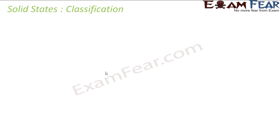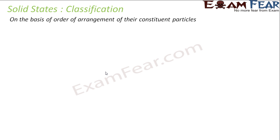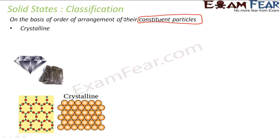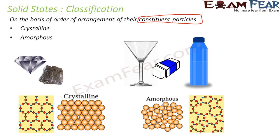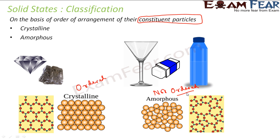So, let us now go further and classify the solids. On the basis of the arrangement of the constituent particles — nothing but atoms, ions, and molecules — we classify solids as crystalline, which has a pretty neat arrangement, and amorphous. Crystalline has a long-range ordered arrangement. Amorphous — the arrangement is not ordered. In fact, the word 'amorphous' itself means not ordered. So we will discuss about crystalline and amorphous in detail.